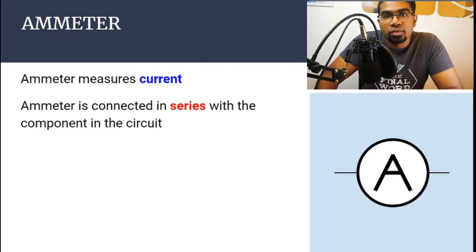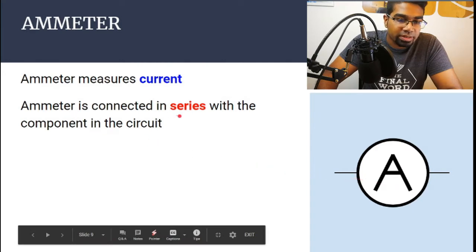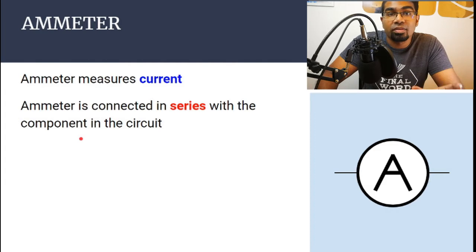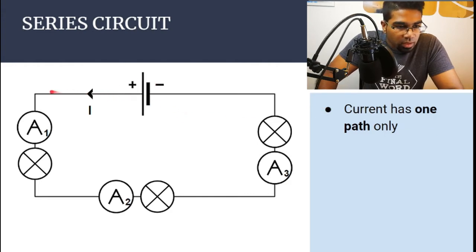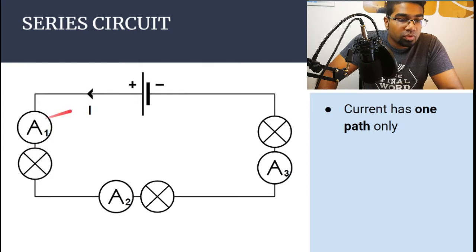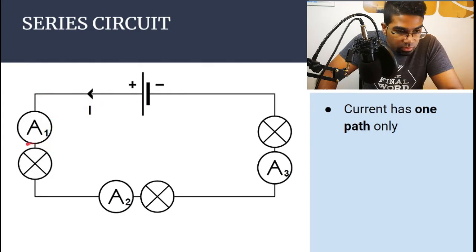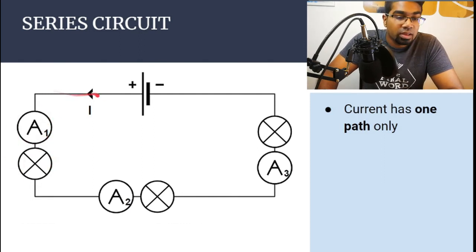Let's compare the values of current in a series circuit and a parallel circuit. The device used to measure current is known as the ammeter. The ammeter is connected in series with the component that we want to measure the current flowing through. So if we wanted to measure the current passing through a bulb, we would connect the ammeter in series with that bulb.